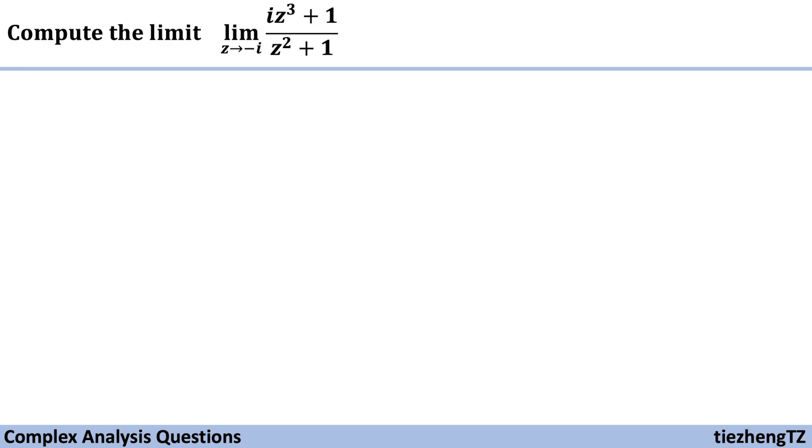This question is to compute the limit of the given function iz³ + 1 over z² + 1 when z approaches -i. So first, when we see this given function, if we just substitute z with -i for the denominator part,